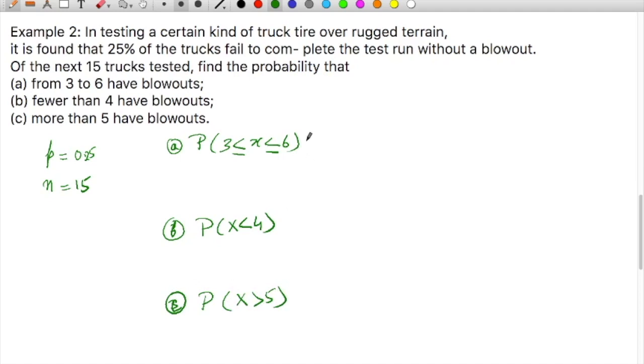It will be the probability of getting X less than or equal to 6 minus the probability of getting X less than or equal to 2. It will be 2, not 3, because 3 is inclusive here. So that is summation X equals 0 to 6.